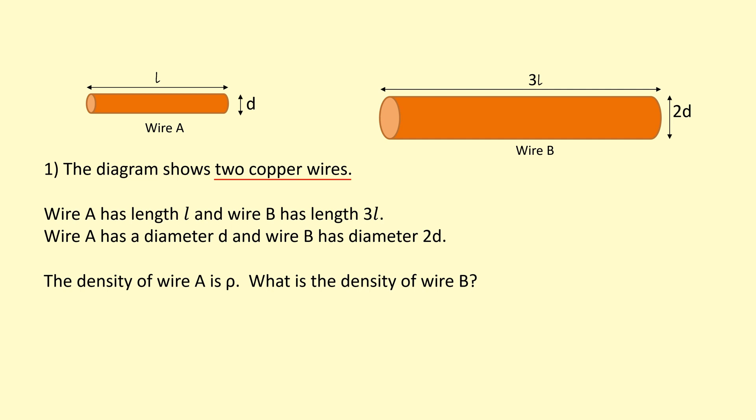The diagram shows two copper wires. Wire A has length L and wire B has length 3L. Wire A has diameter D and wire B has diameter 2D. The density of A is rho and we need to find the density of B.